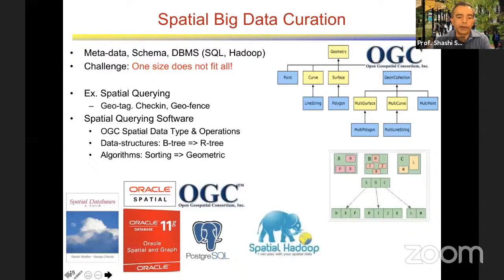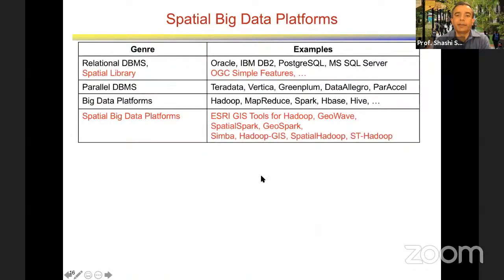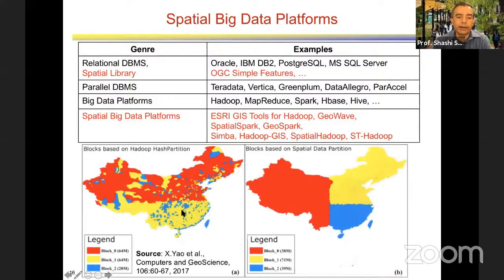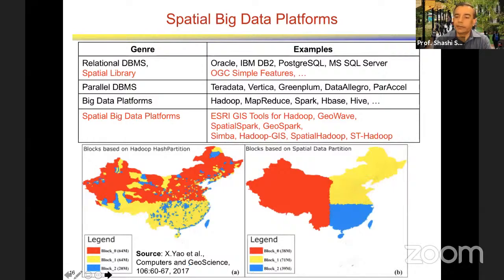On parallel platforms, there is also a need to think spatially. Generic Hadoop or cloud systems try to divide data randomly, but in spatial data it is often better to divide it in spatially contiguous chunks — and if you do that, you get better performance. Spatially-aware software is now coming up on cloud and other platforms, making it easier to process big spatial data.